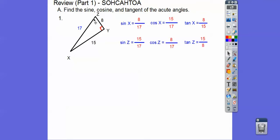And then do the same thing with z. So the sine of z is opposite over hypotenuse. The cosine is adjacent over hypotenuse. Tangent is opposite over adjacent. All right, easy.